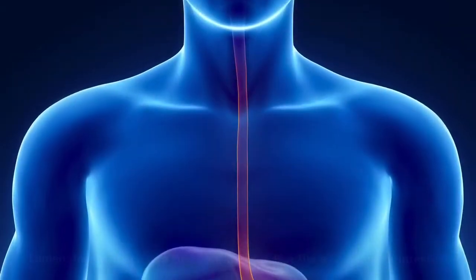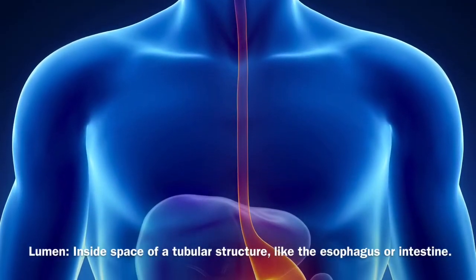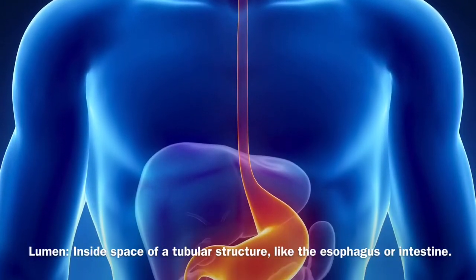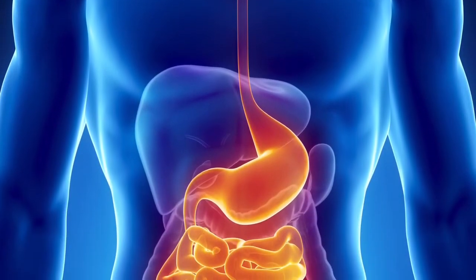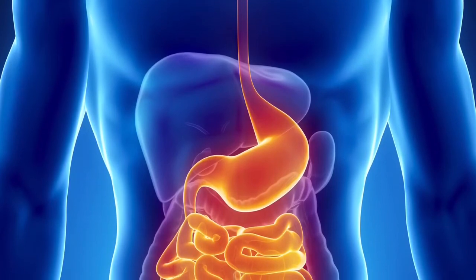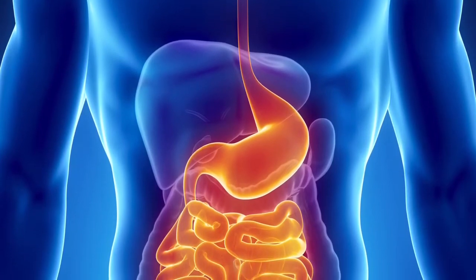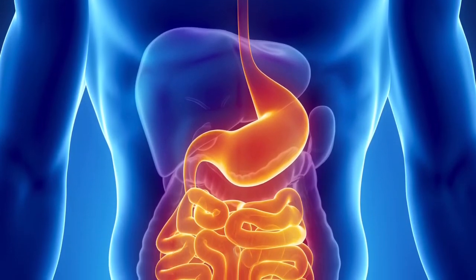Endoscopic ultrasound is a capability of the endoscopy to look beyond the surface of the lumen, like the stomach or esophagus. It looks at the wall of the GI tract and it also looks beyond it.